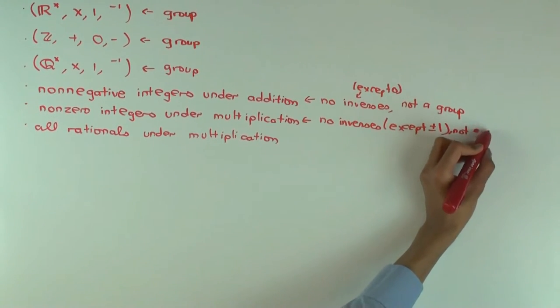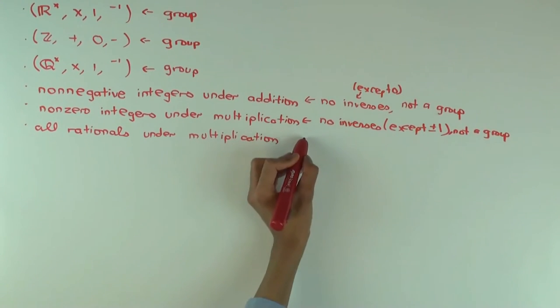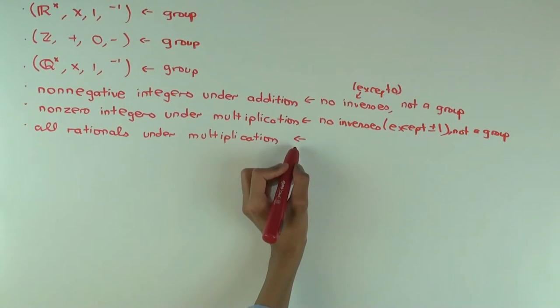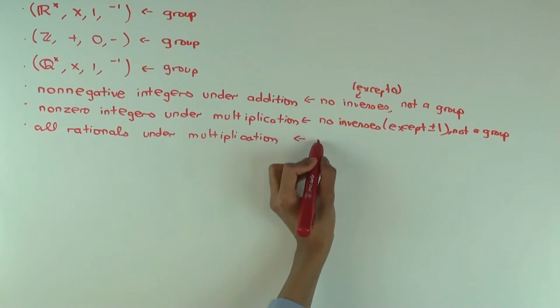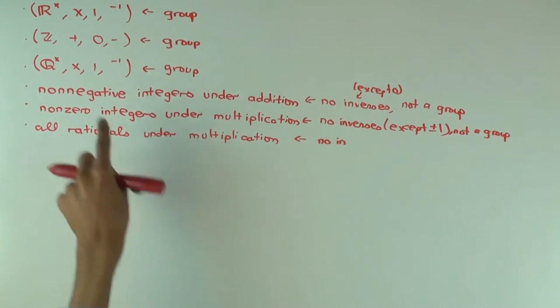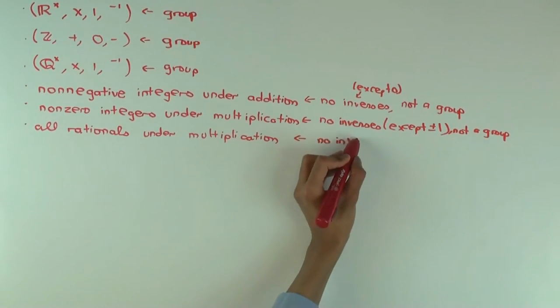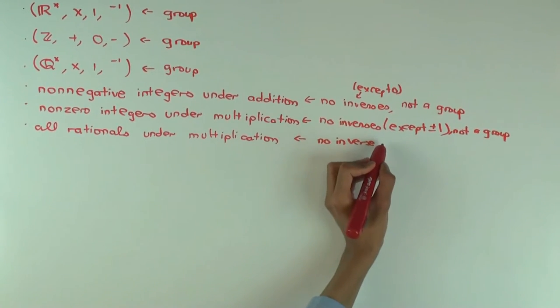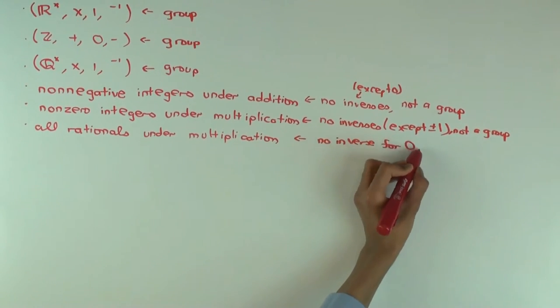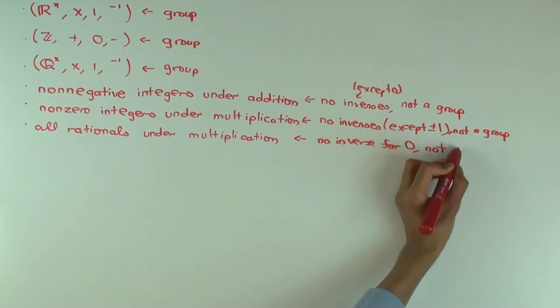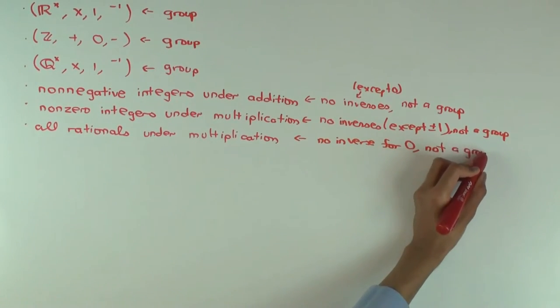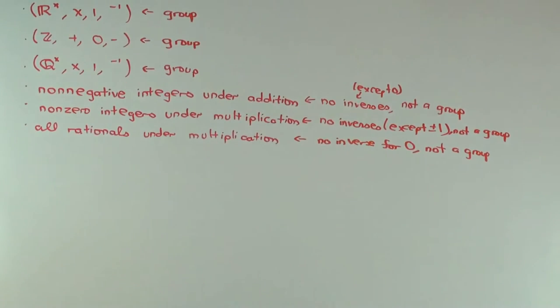What about the third example? No. Why not? You didn't exclude 0. No inverse for 0. But if you did exclude 0, it would be a group. So these are some rather simple examples. These are non-examples. These three are some simple examples.